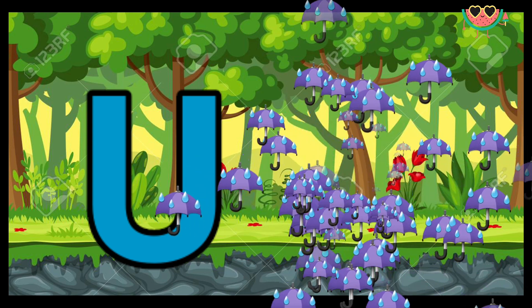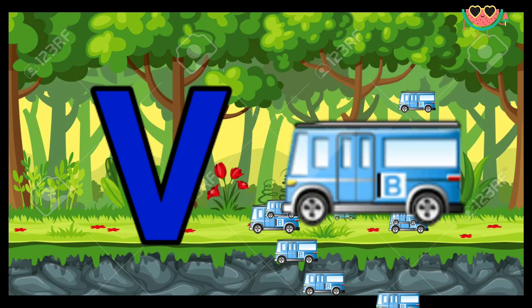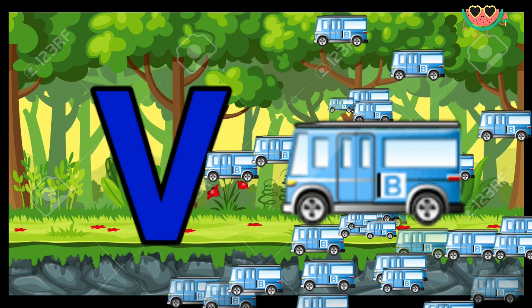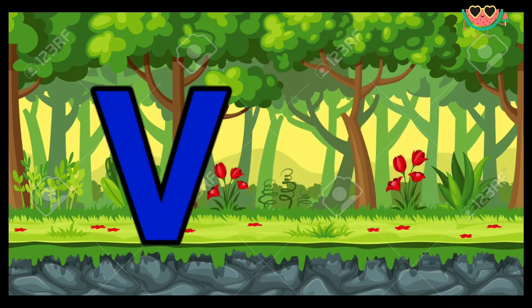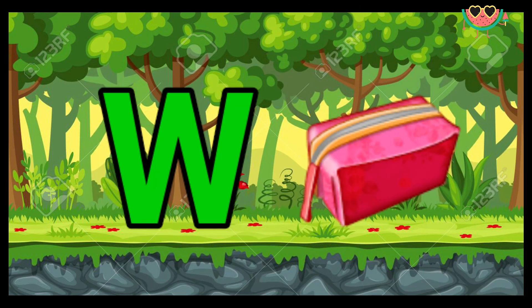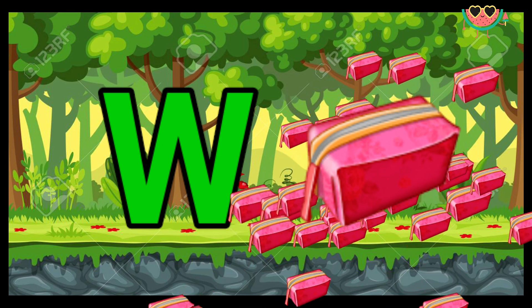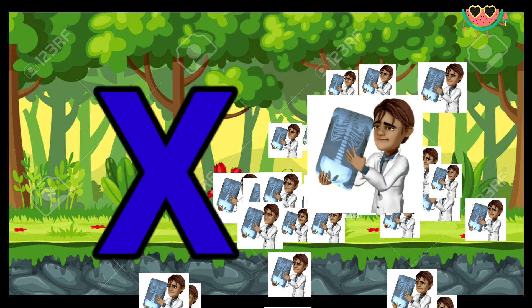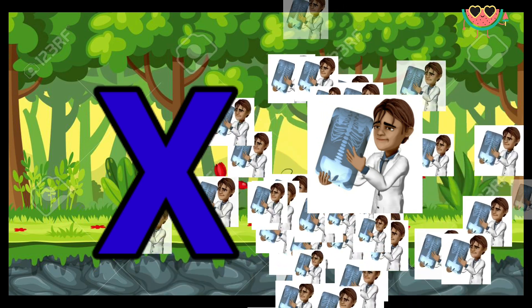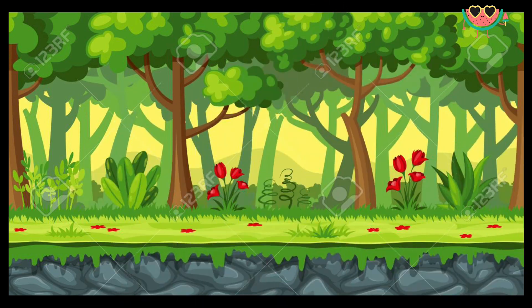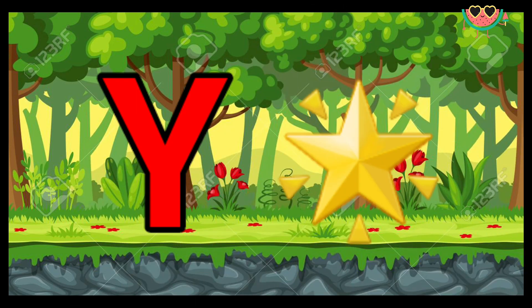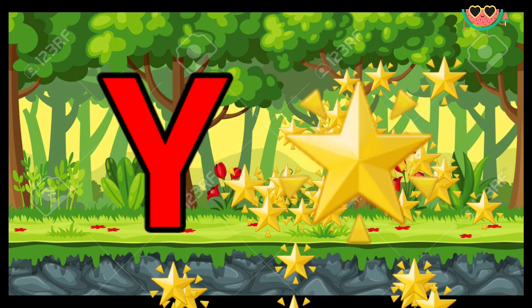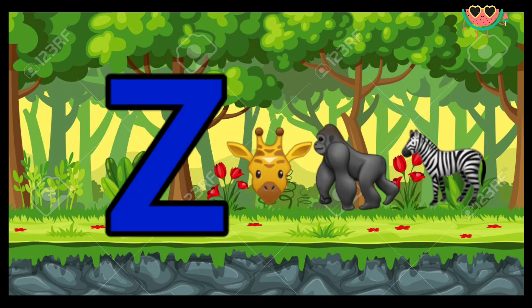B for wand. W for wallet, X for red, X for x-ray, Y for yellow, Z for two.